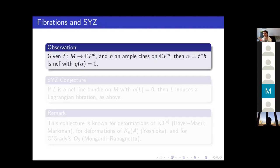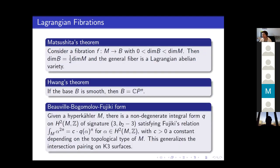Here is a trivial observation. If you take a Lagrangian fibration and pull back an ample class from the base — assume the base is smooth CP^N — then the pullback of this ample class is nef, and moreover the Beauville-Bogomolov-Fujiki form Q vanishes on it. This is because if you pull back a hyperplane section from CP^N and intersect it n times, you get the class of a fiber, and one more intersection gives zero. By Fujiki's formula, this forces Q(alpha) to equal zero since the constant is positive.